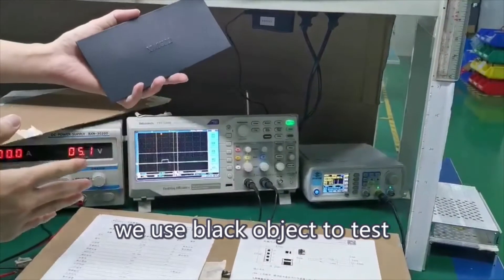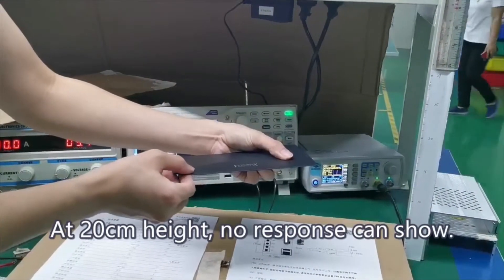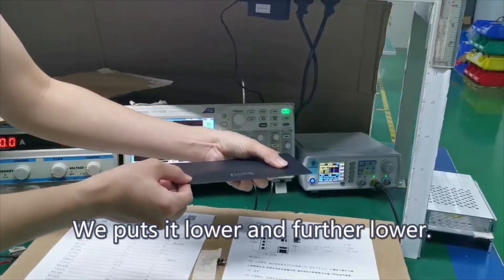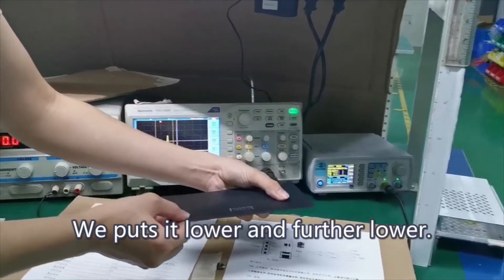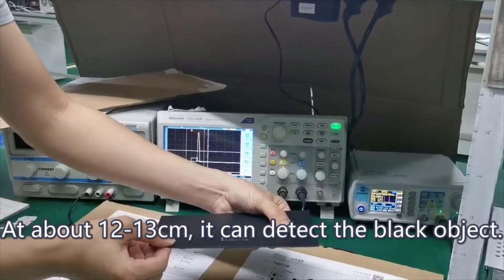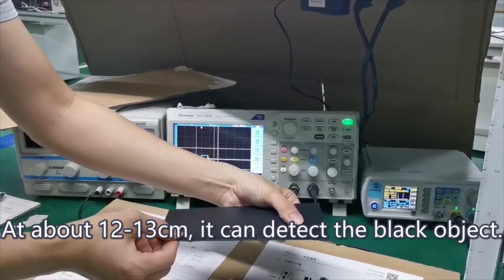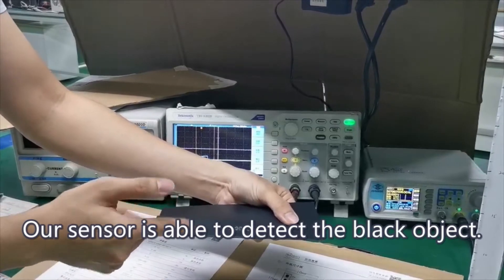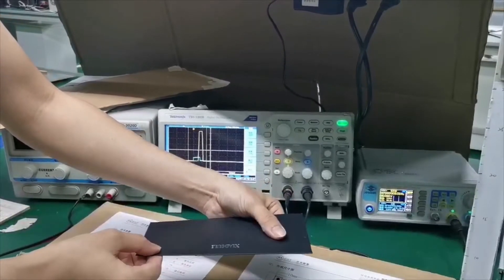Next, we use a black object to test. At about 20 cm height, no response can show. When we put it lower and further lower, at about 12 to 13 cm, it can detect the black object. Our sensor is able to detect the black object.